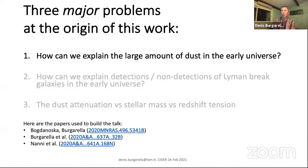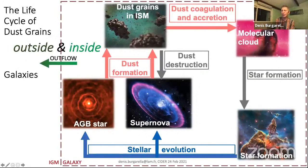The first one is how can we explain the large amount of dust that we see in the early universe. All these points are studied in the papers listed at the end, so we will see now about the first one.